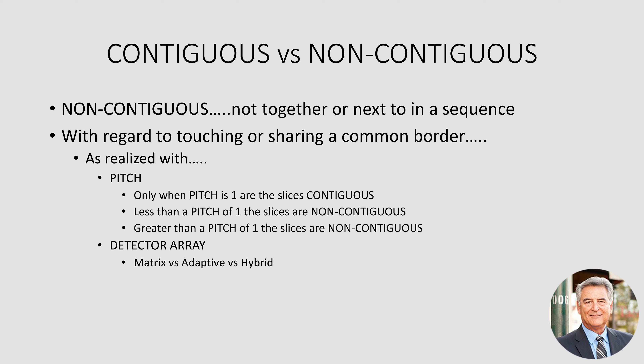As realized with pitch, only when pitch is one are the slices contiguous — that is touching, or next to one another. When the pitch value is less than one, there will be overlap, and the slices are non-contiguous. On the other hand, when the pitch is greater than one, there'll be areas of the view angle not covered, so the slices will be non-contiguous.